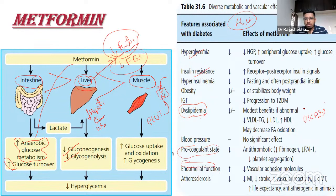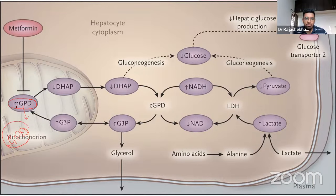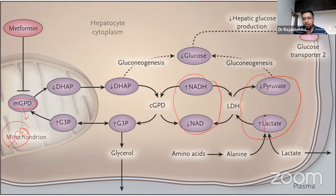Metformin has been shown to be cardiovascularly stable, with anti-atherogenic actions independent of its effect on blood glucose. At the molecular level, it suppresses gluconeogenesis mainly by inhibiting mitochondrial glycerol-3-phosphate dehydrogenase (mGPD), altering the lactate-to-pyruvate and NADH-to-NAD ratios, ultimately reducing hepatic glucose output.